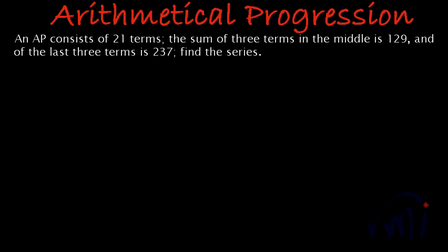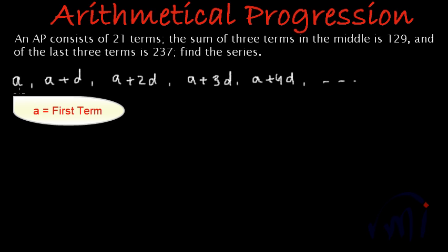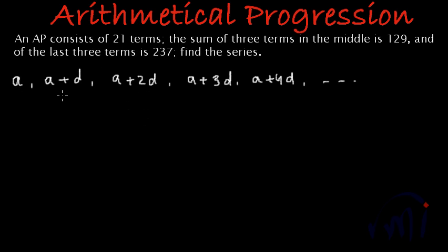We have to find an Arithmetical Progression. We write an AP as: first term a, second term a plus d, third term a plus 2d, fourth term a plus 3d, fifth term a plus 4d, and so on, where a is the first term and d is the common difference.